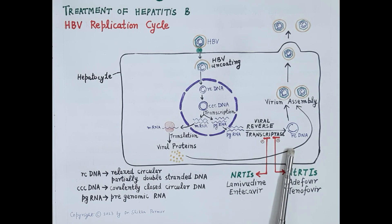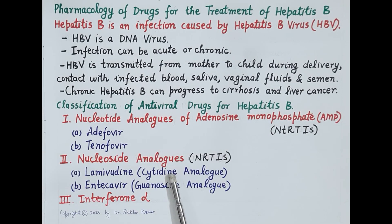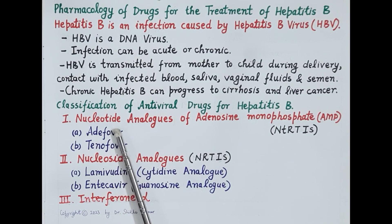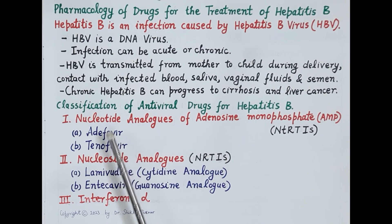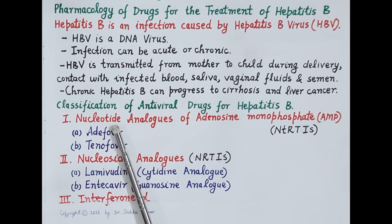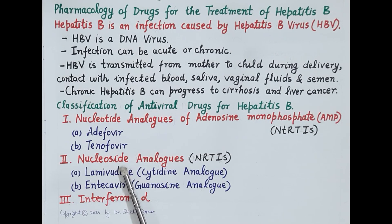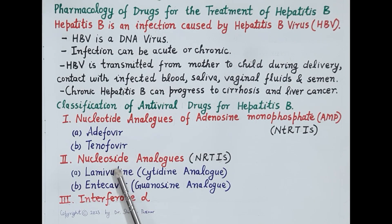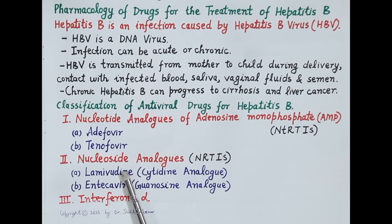Now let's look at the classification of antiviral drugs used for the treatment of hepatitis B. To understand this classification we should know what nucleotides and nucleosides are. Nucleotides are the building blocks of DNA and RNA, and they consist of a nucleic acid base, sugar, and phosphate group. Nucleosides consist of a nucleic acid base and sugar only. When nucleosides are phosphorylated they become nucleotides. Nucleotides and nucleosides are essential for the synthesis of DNA.